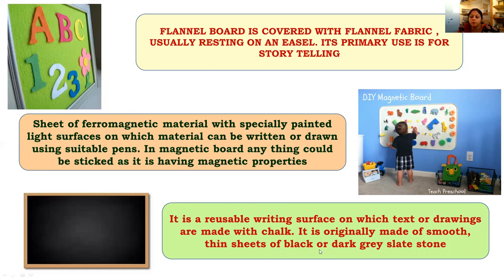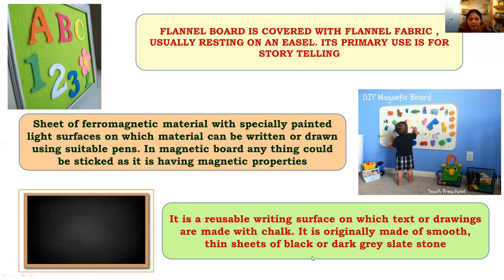Next comes the chalkboard, which we use every time in class. It is a reusable writing surface on which text or drawings are made with chalk. It is originally made of smooth, thin sheets of black or dark gray slate stone. By using a chalk piece, we write pictures or words, which act as an aid to convince an audience about particular information. This is also one of the visual media.